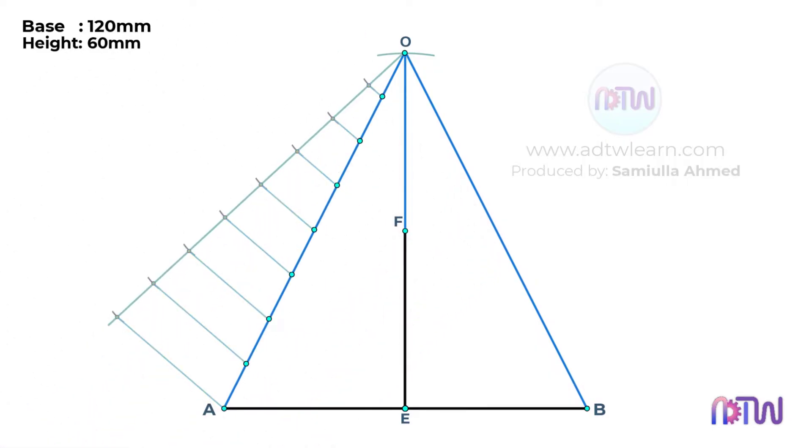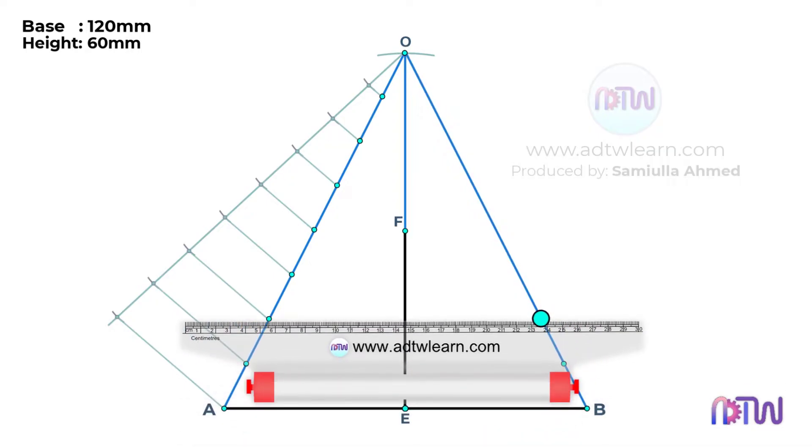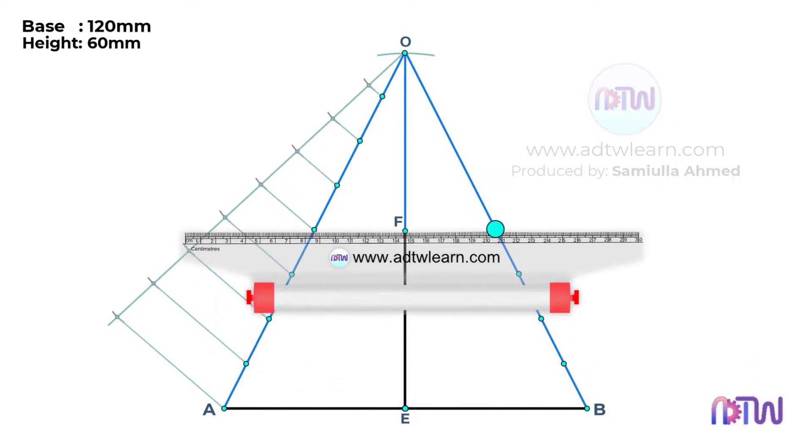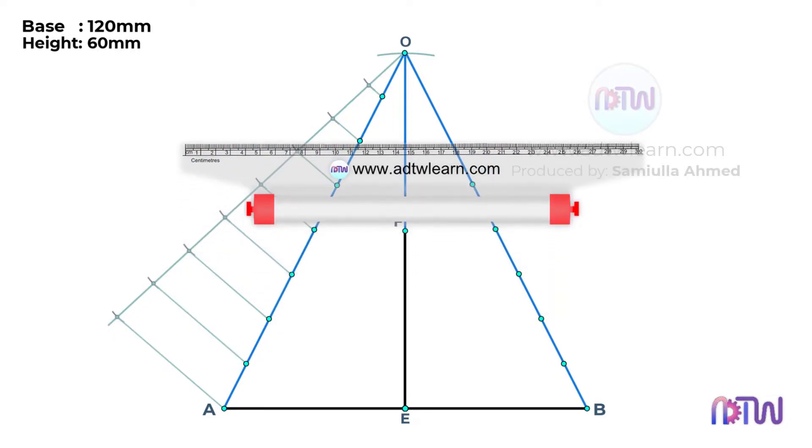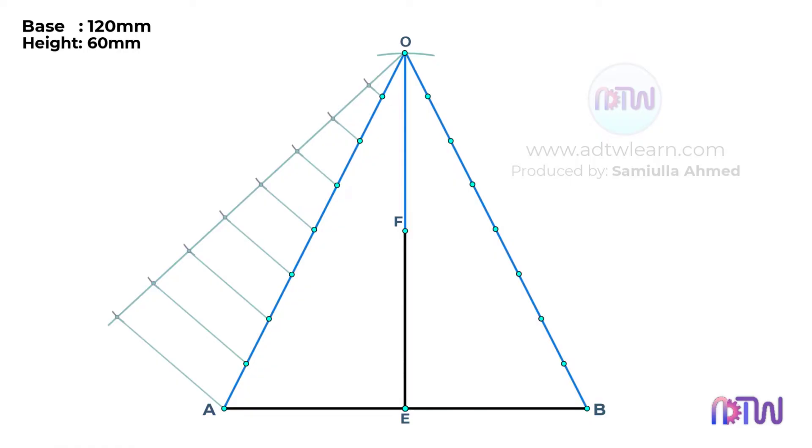Next, using a drafter or a roller scale, and using this line AB as a reference, transfer these points on the line OB. Therefore, we have divided both the lines into 8 equal parts.